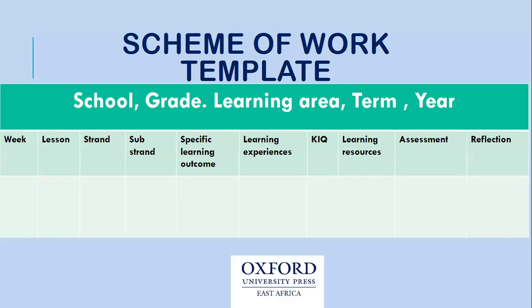In the scheme of work columns: we have the week, so you know the weeks in the term. We have the lessons — specific lessons allocated to each learning area in a week, found in the curriculum design. You put your lessons according to how many you are expected to teach in that learning area. For example, mathematics has five lessons in a week. In the curriculum design, at the strand and sub-strand level, they've also given you specific lessons per that sub-strand. Make sure that as you do the strand and sub-strand, you cover it in the specified lessons.